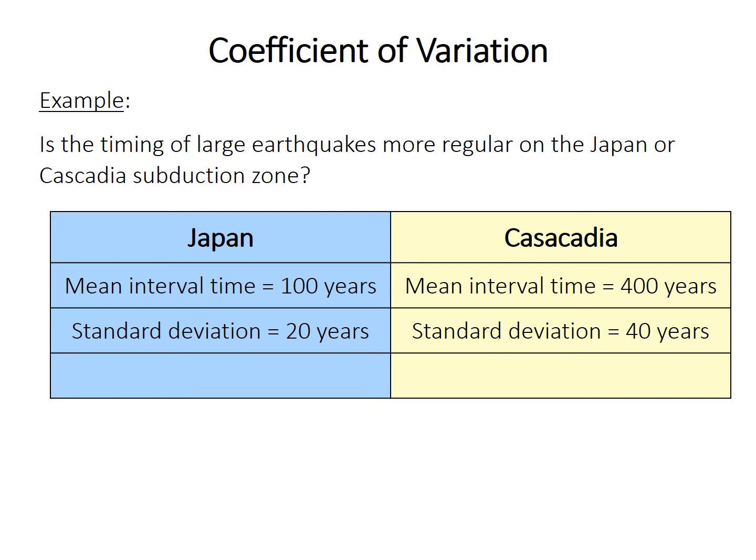And so if that difference is important, which in this made-up data it is, we would then calculate the coefficient of variation instead. So standard deviation divided by mean. Japan is 20 divided by 100 or 0.2. Cascadia is 40 divided by 400 or 0.1. So the conclusion is actually the opposite. Earthquake timing in Japan in this made-up data at least seems more variable than in Cascadia.